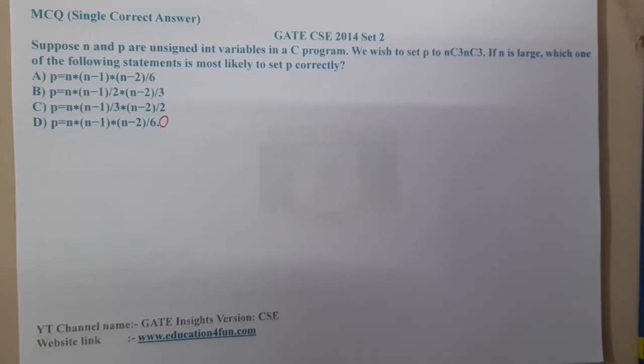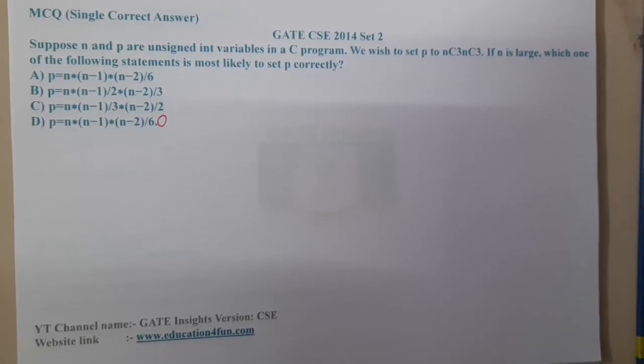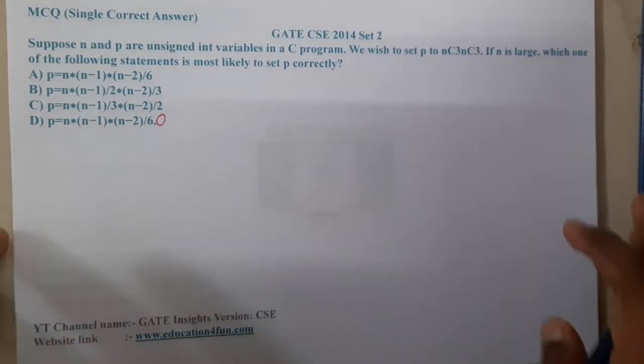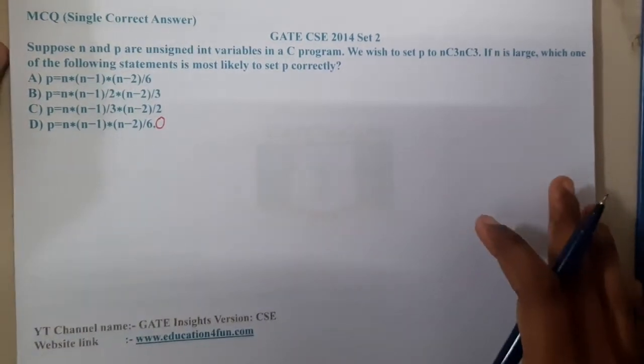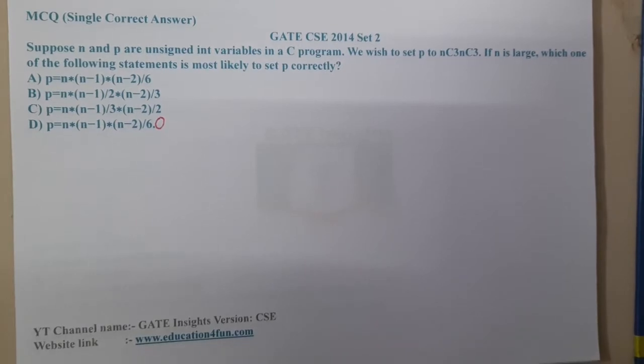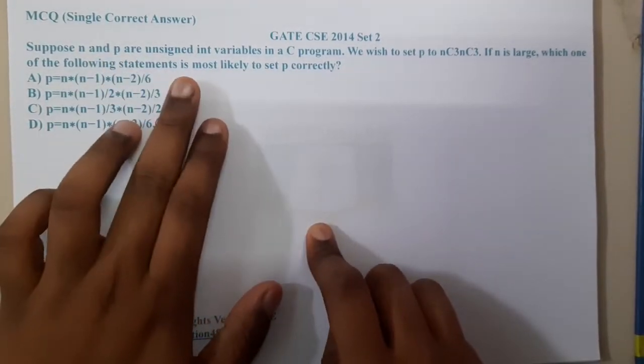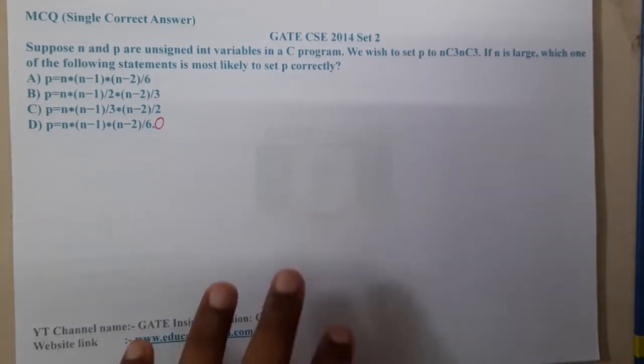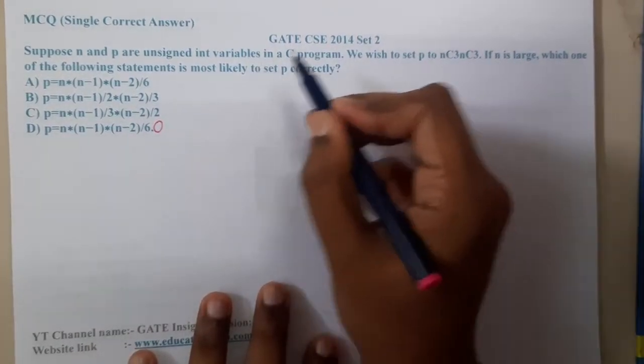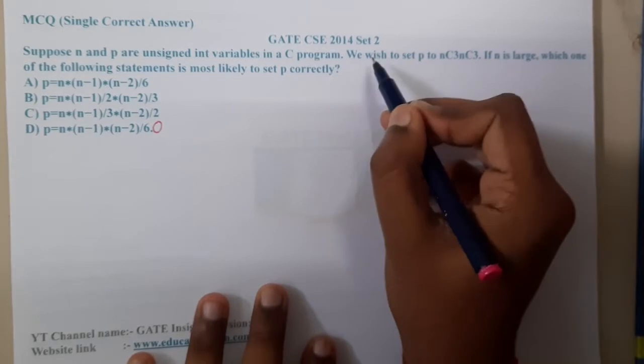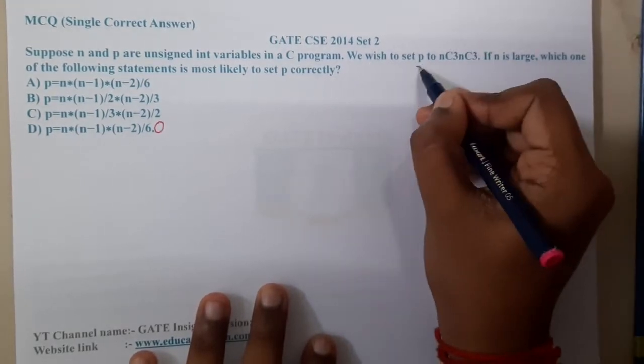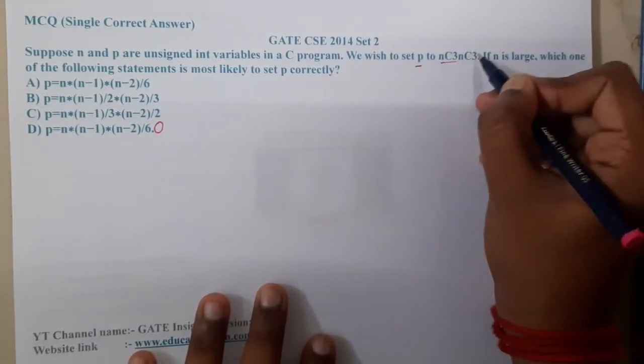Hello guys, we are back with our next lecture. In this lecture, let us go through the next question that is a GATE CSE 2014 Set 2 question. So the question is given in this way: suppose n and p are unsigned int variables in a C program.